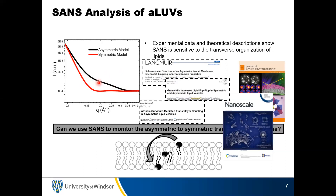One thing my group wants to understand is not only the structure but how these lipids move within the bilayer. One of the movements SANS is particularly well suited to measure is lipid flip-flop — also known as transverse lipid diffusion or lipid translocation. Depending on what mechanism you believe, these terms will be used throughout the literature. Effectively, what we want to measure is the rate that a lipid goes from one leaflet to the other leaflet of the bilayer.